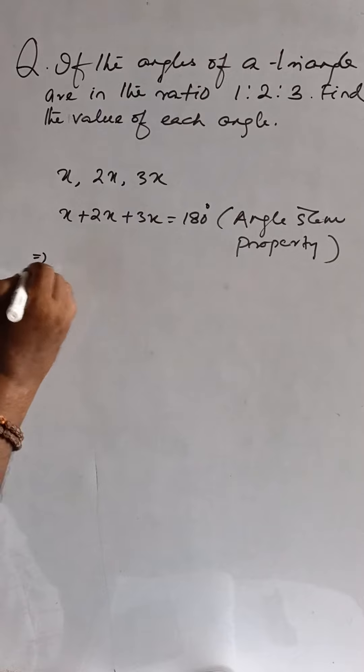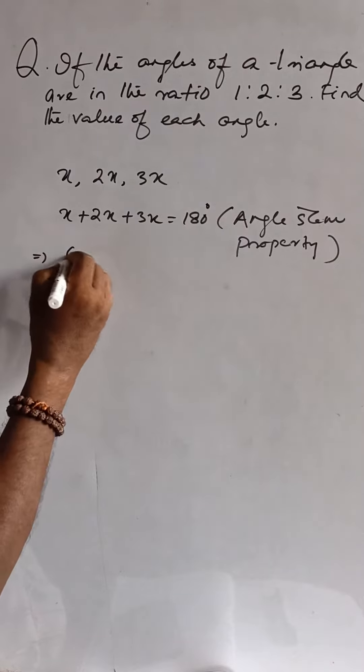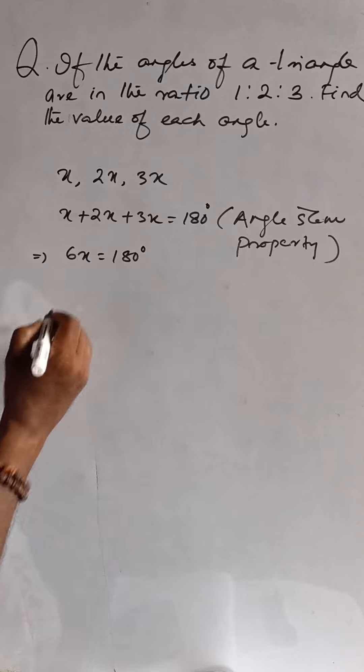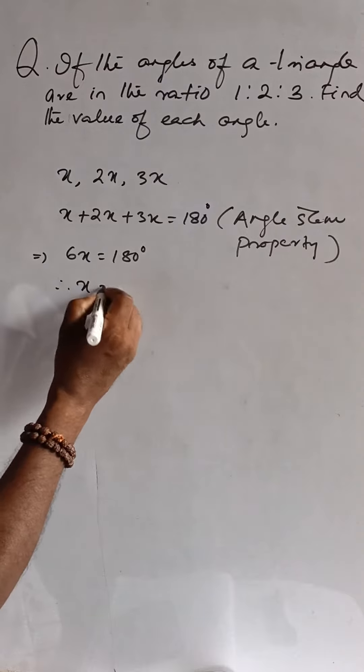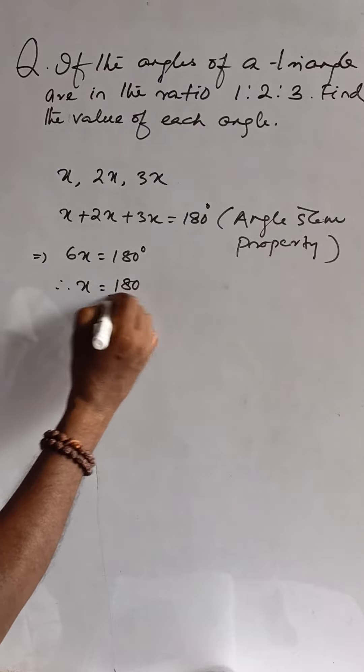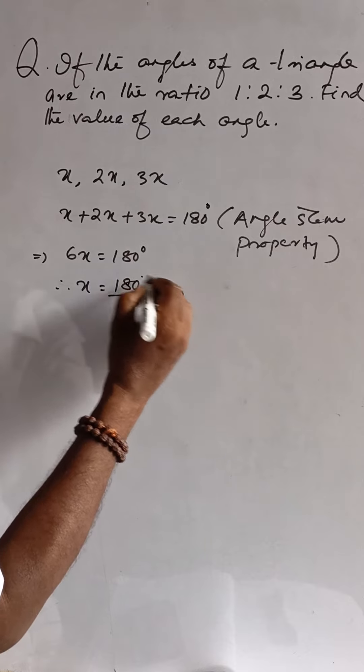So now this is 6x is equal to 180 degrees. Therefore, x is equal to 180 degrees divided by 6, that is 30 degrees.